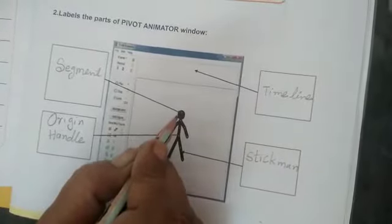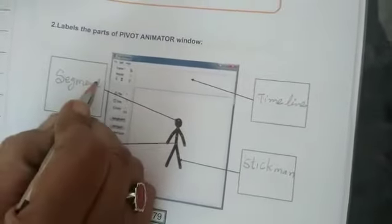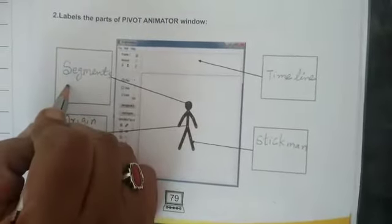Now here they have given arrow mark to this dot. This dot is known as red color dots are segments. We have learnt now children, red color dots are known as segments.